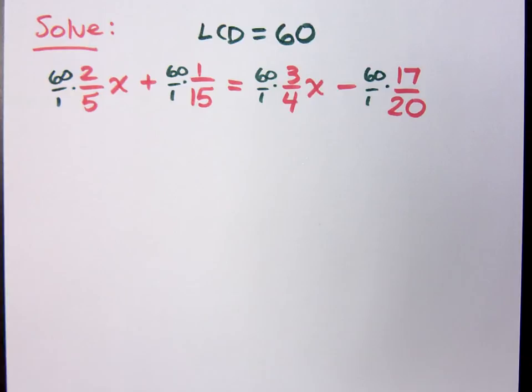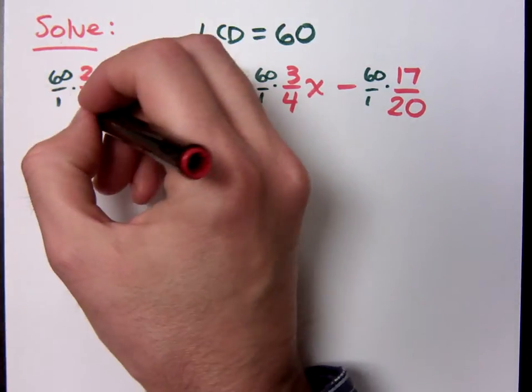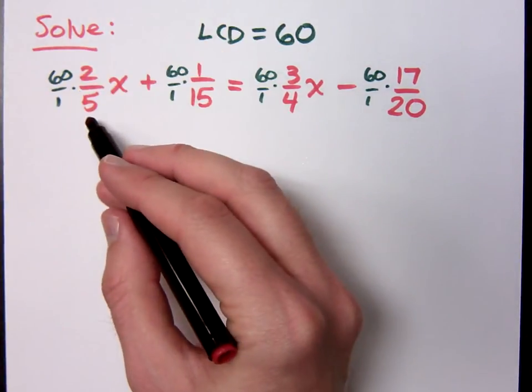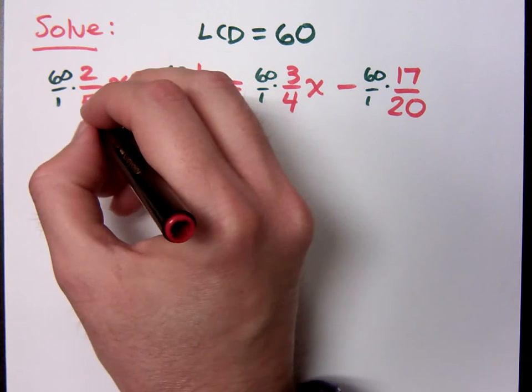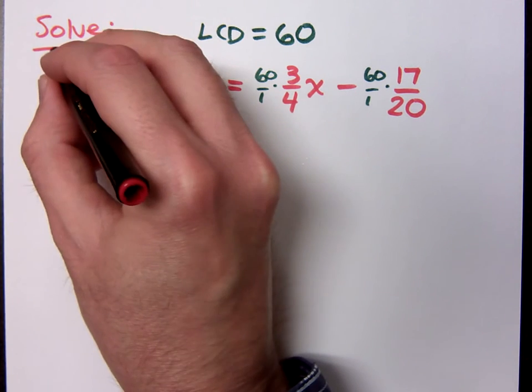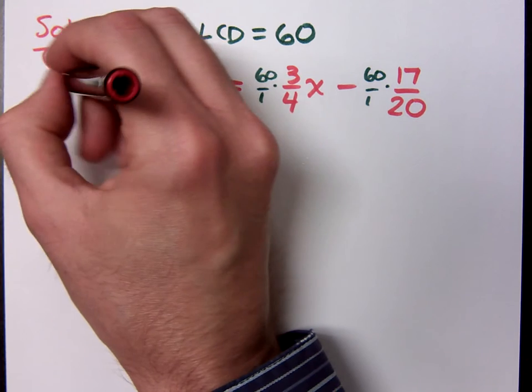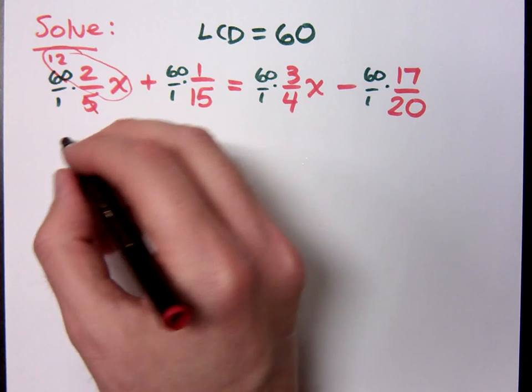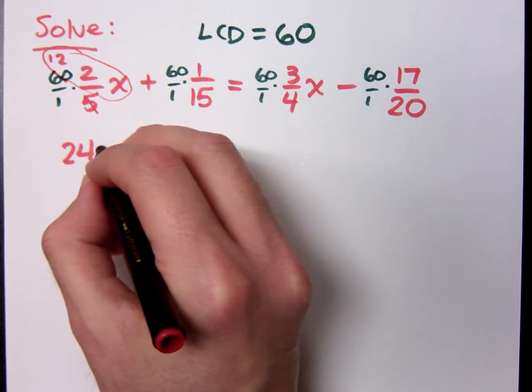So what happens for this first piece? 5 goes into 60 12 times. So what does this whole term give me? 24x. It gives me 24x.